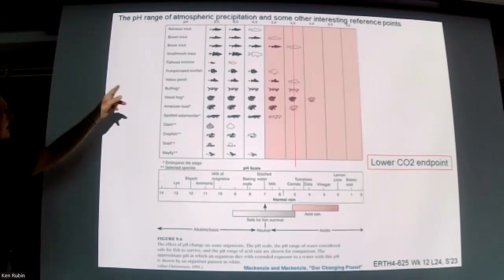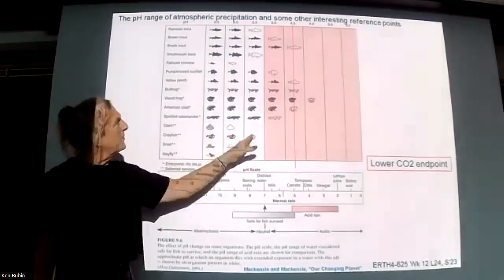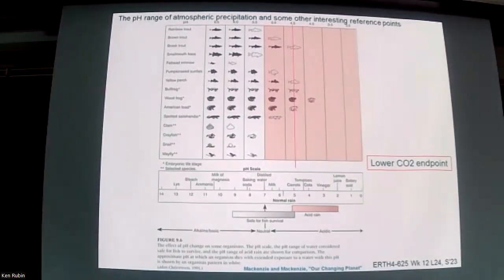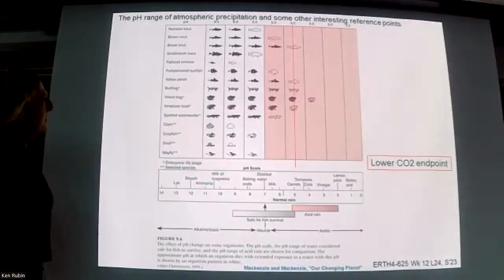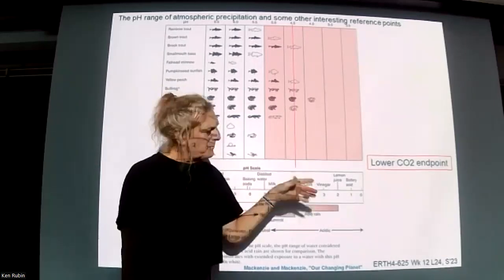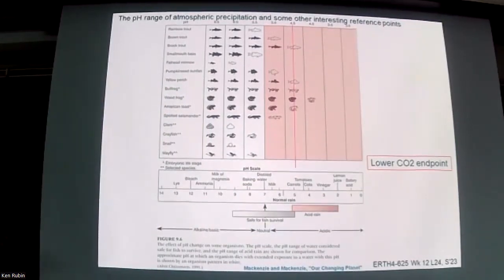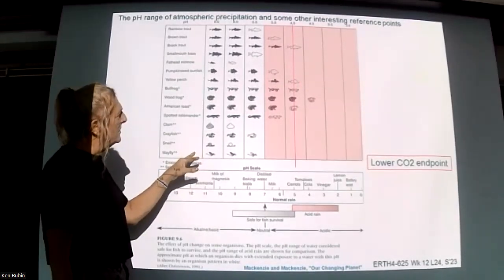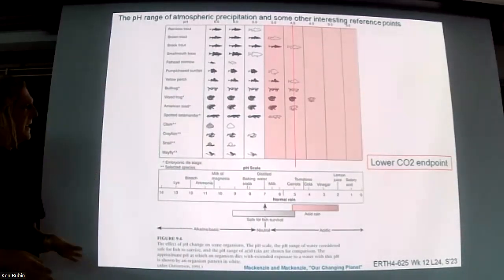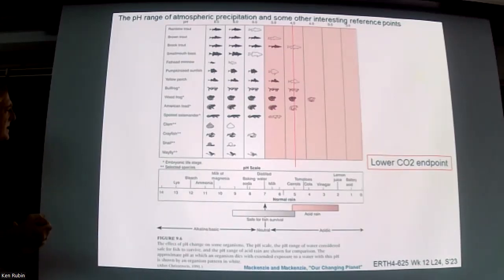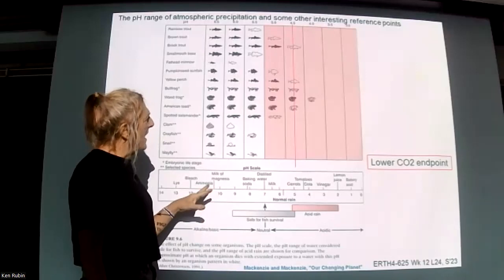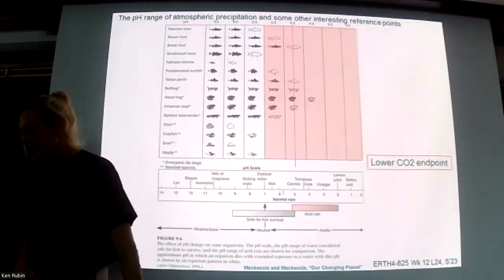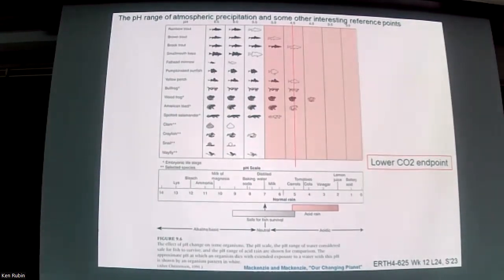This diagram shows pH across the top — 6.5, 6, 5.5, 5.0, 4.5 — and the sensitivity of various aquatic organisms to acidity. The lower CO2 endpoint falls approximately between the 5.0 and 4.0 boxes. Biological systems, especially microfauna, have evolved within the pH range set by carbon dioxide. Many organisms have extreme sensitivity to acid just slightly below what we'd naturally find in the hydrosphere, and pretty much everything fails below that lower CO2 endpoint.